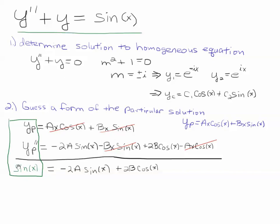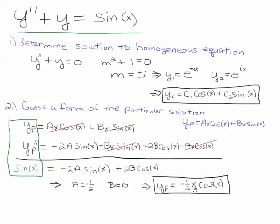Now I just match up coefficients. The coefficient of the sine is 1. And there's no cosine term. So the b will be 0. So I have minus 2a equals 1. And that leaves me with a equaling minus 1 half and b equaling 0. And so I get a particular solution. If a is minus 1 half and b is 0, then my particular solution is minus 1 half x cosine x.